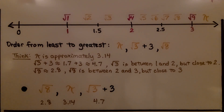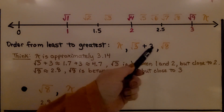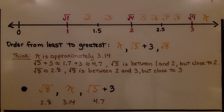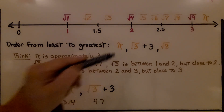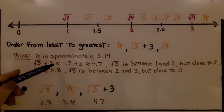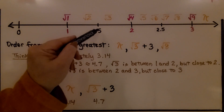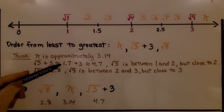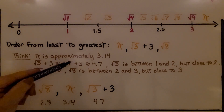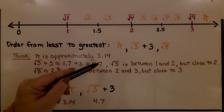Here it's telling us to order from least to greatest: pi, the square root of 3 plus 3, and the square root of 8. Pi is approximately 3.14. The square root of 3 plus 3 is going to be approximately — the square root of 3 is greater than 1.5 but less than 2, so we can say it's about 1.7. We need to add 3 to it, so we can say it's approximately 4.7, or 4 and 7 tenths.